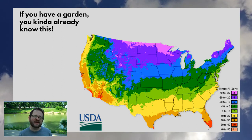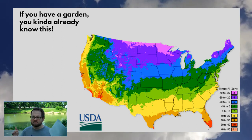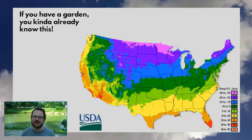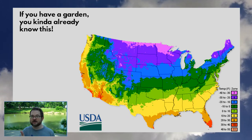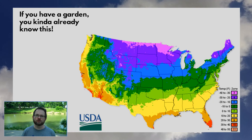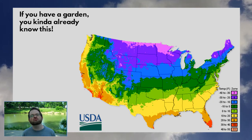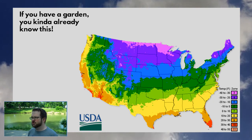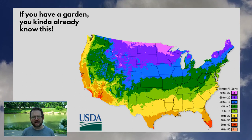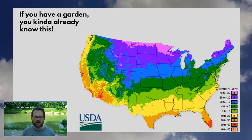This is a standard USDA plant hardiness map that shows different climate regions. If you want to grow roses in your garden, you need to make sure you're in climate zone 5 or whatever, and you can only get roses that will survive in climate zone 5 or hardier.